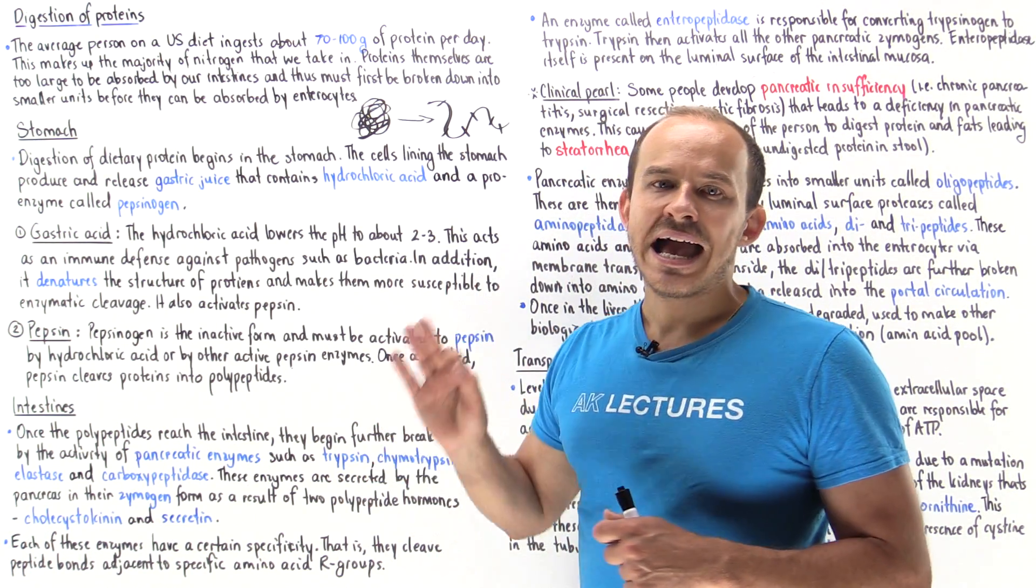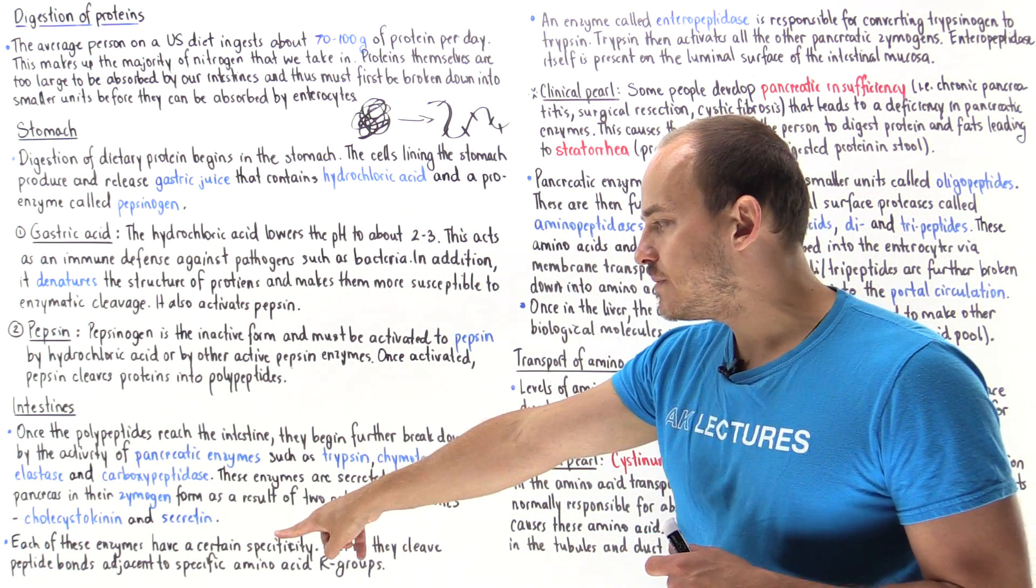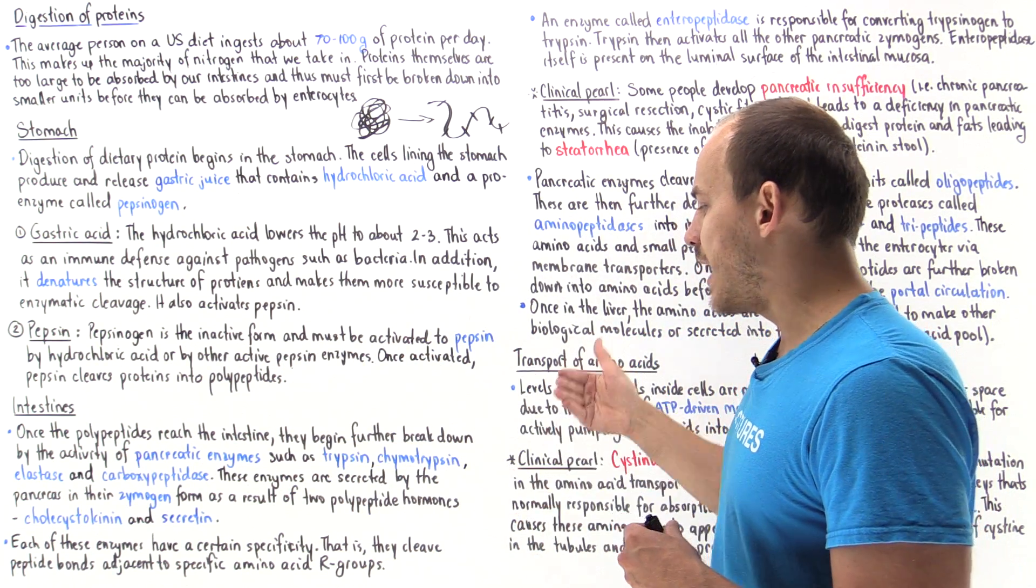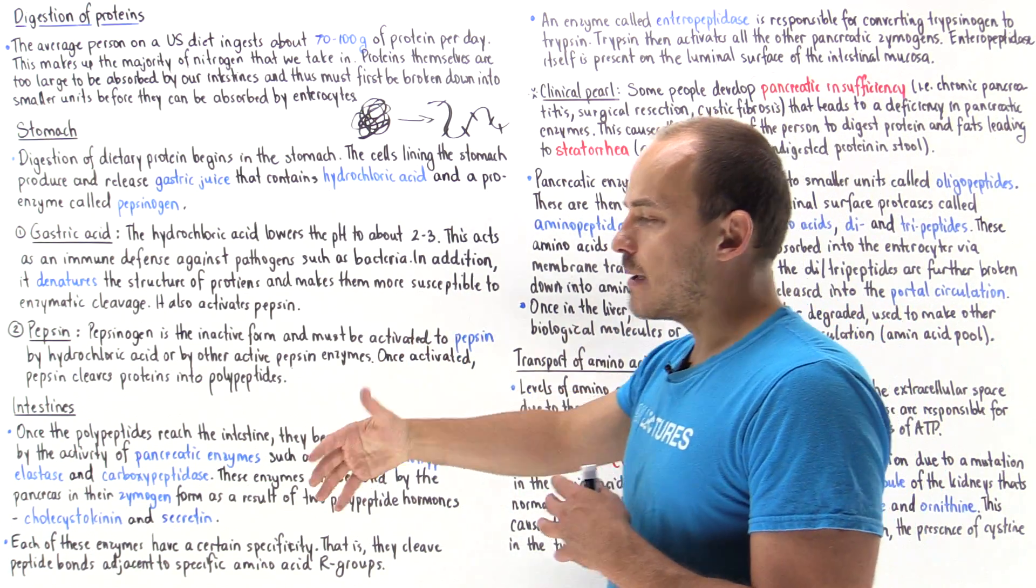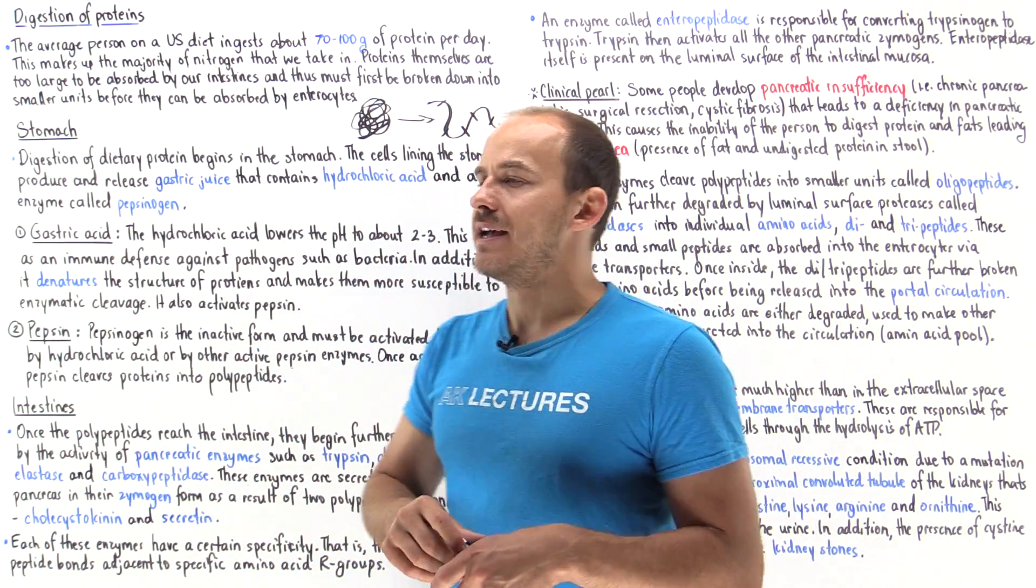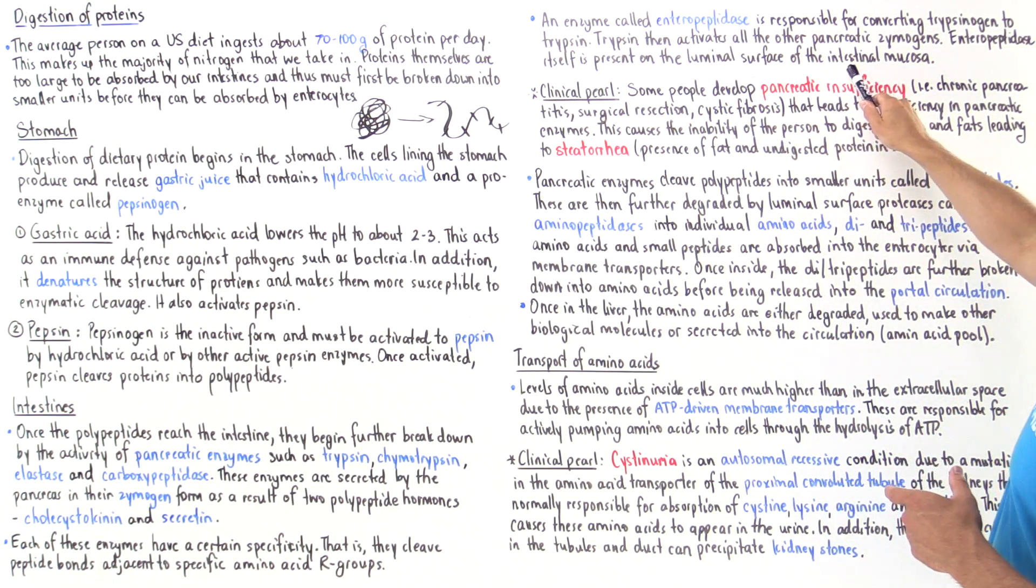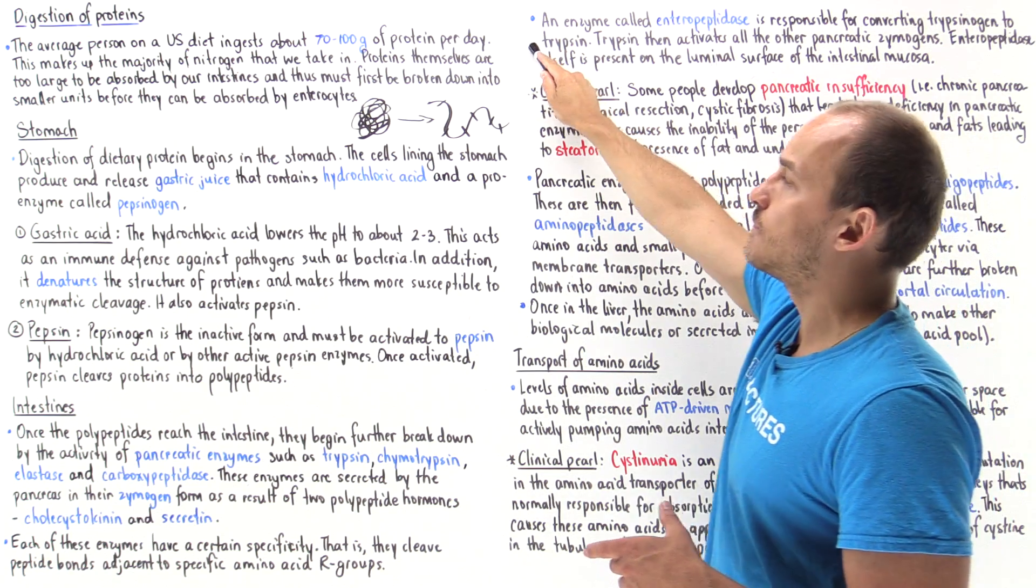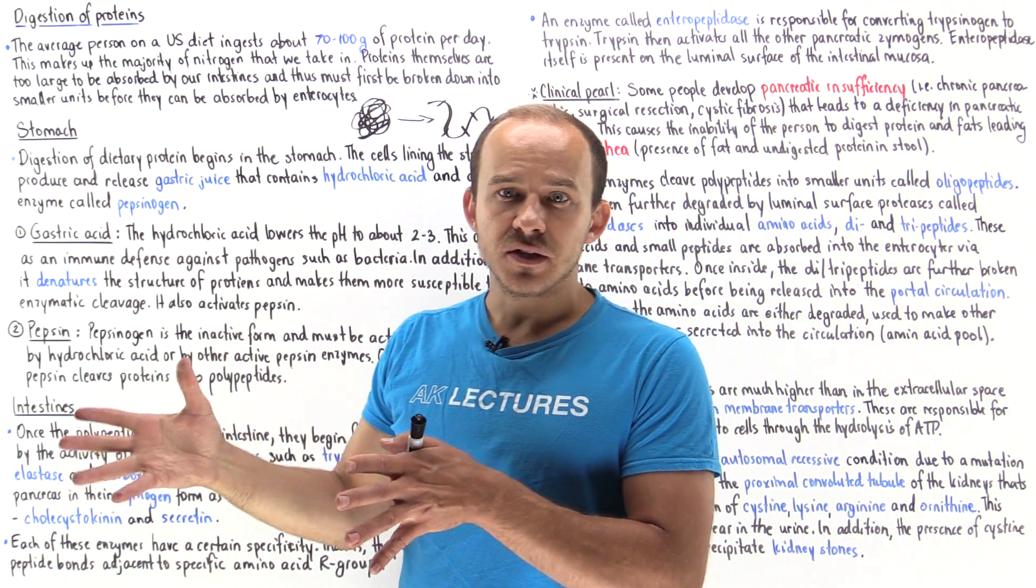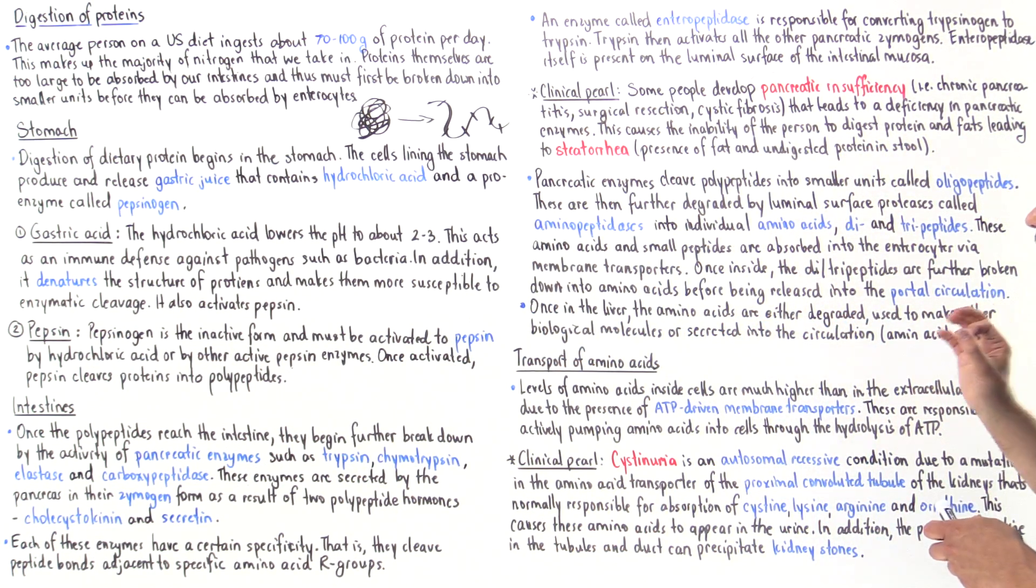Each one of these enzymes has its own specific specificity, and what that means is they cleave peptide bonds adjacent to specific amino acid R groups. But what actually converts them from the zymogen inactive form to the active enzymatic form? An enzyme found on the luminal surface of the intestinal mucosa known as enteropeptidase is responsible for initially converting trypsinogen into its active trypsin form. Once activated, trypsin then goes on to activate all the other pancreatic enzymes released by the pancreas.